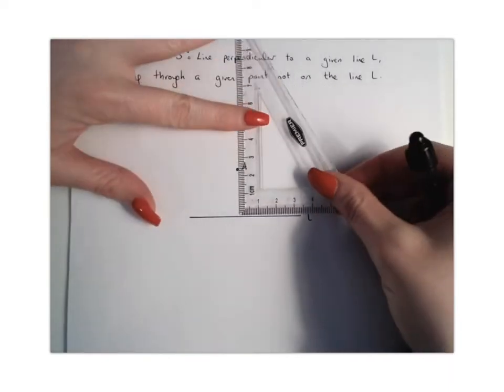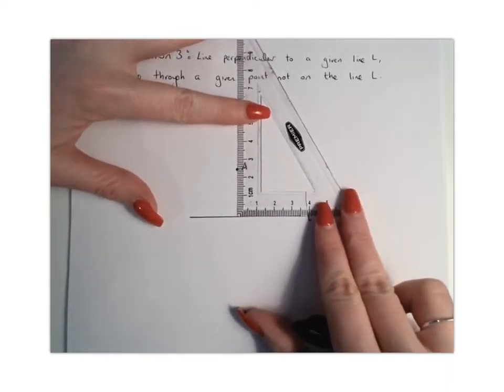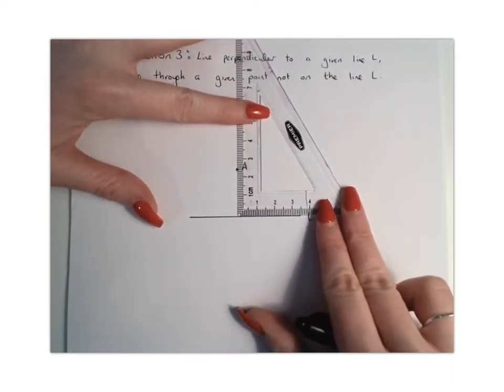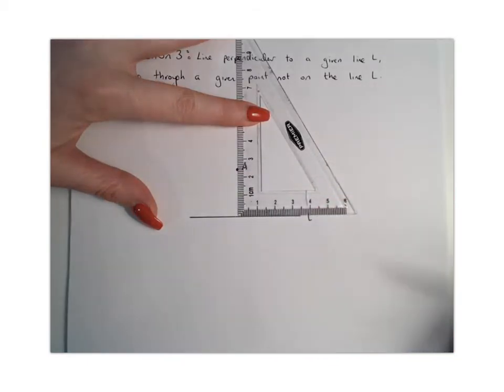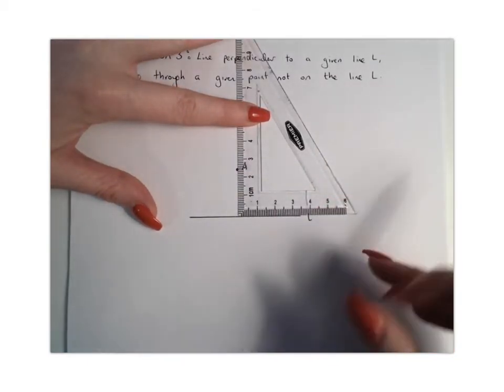and the easiest way to do this construction would be simply to line up your set square with your line L, and obviously your set square is at 90 degrees, and draw your line through point A, and you've got your perpendicular line going through A. So that's one method.